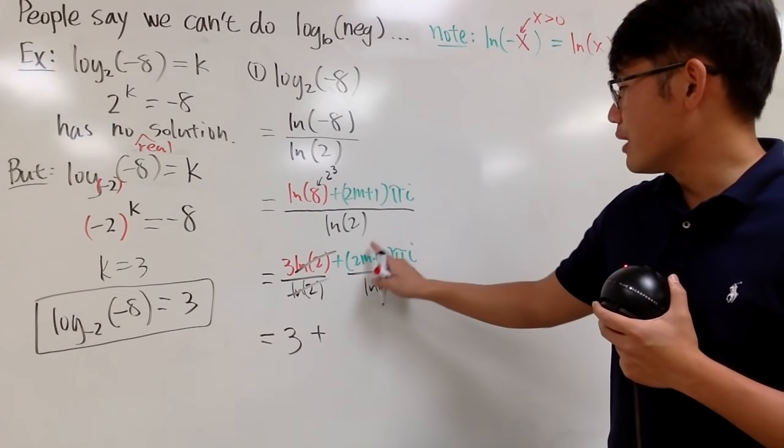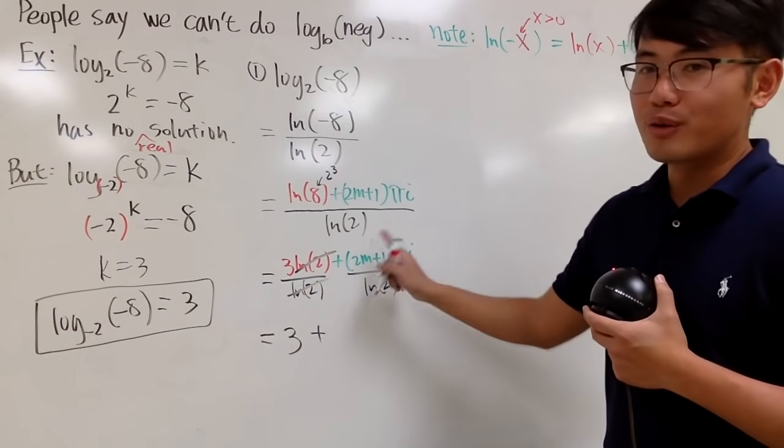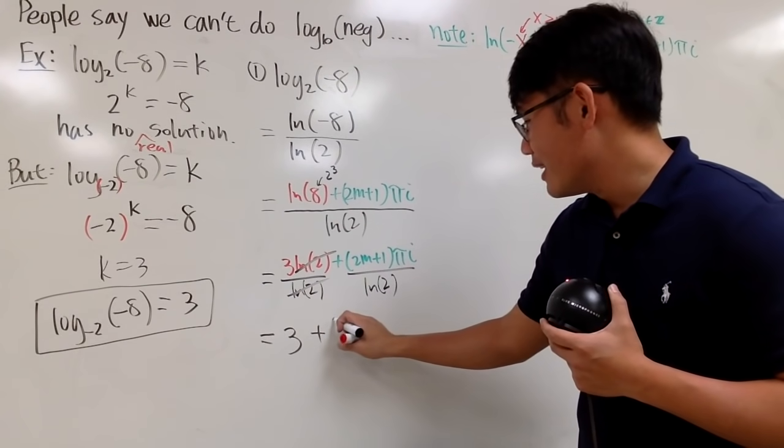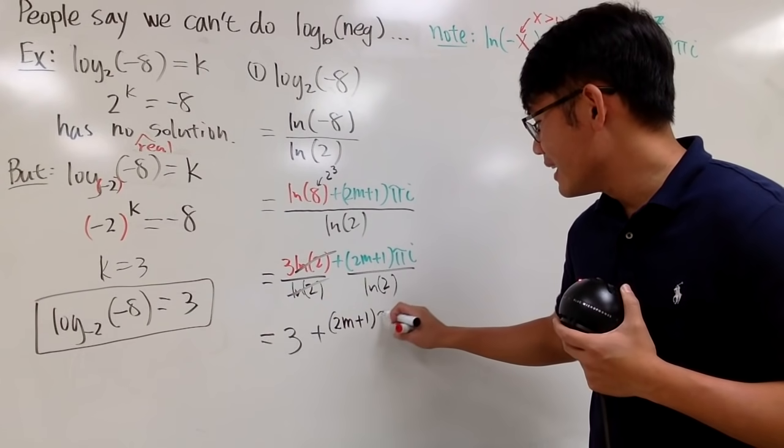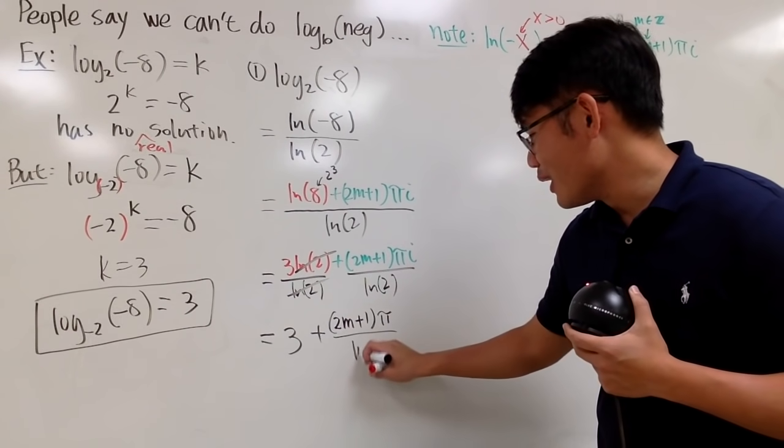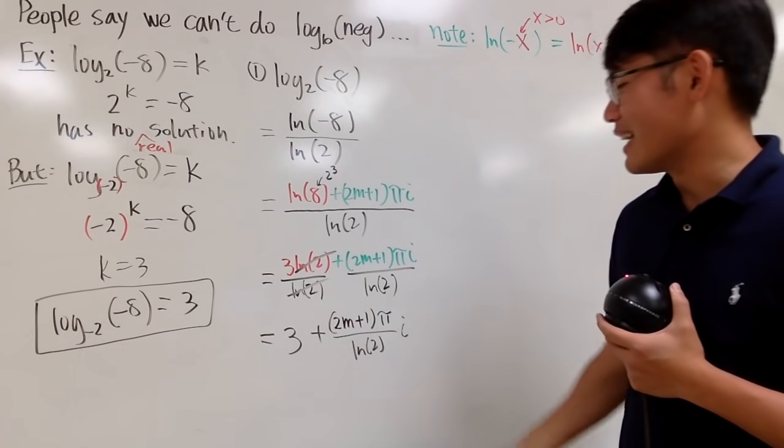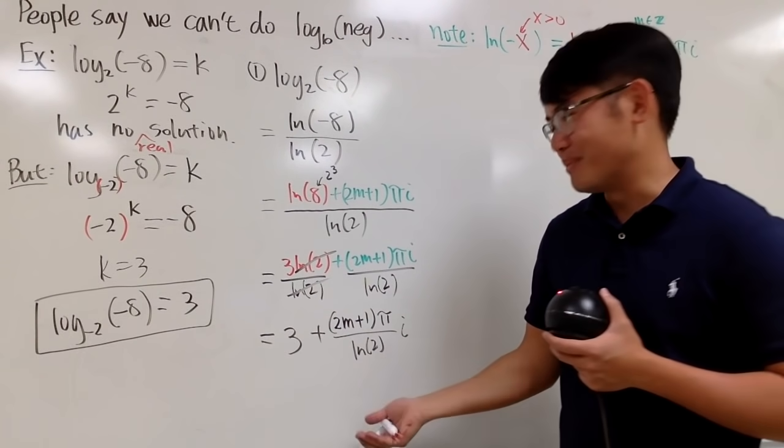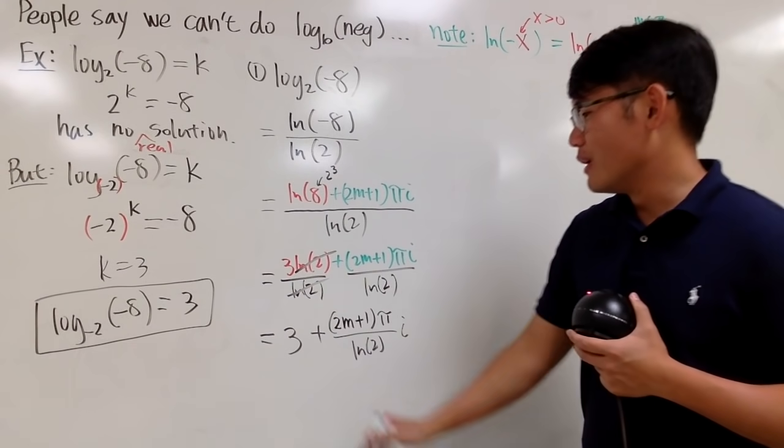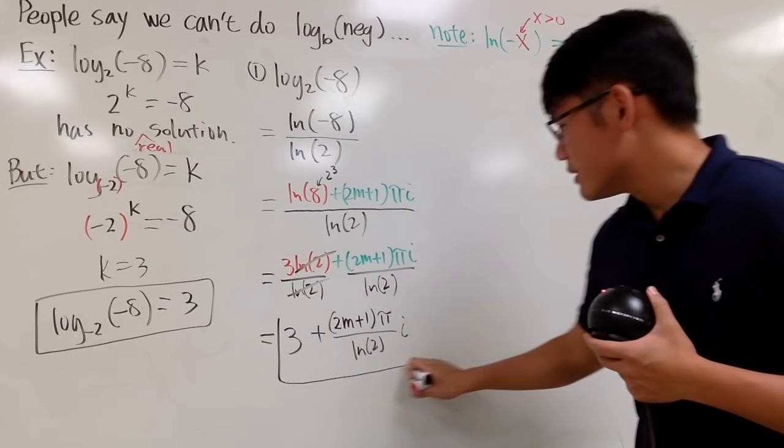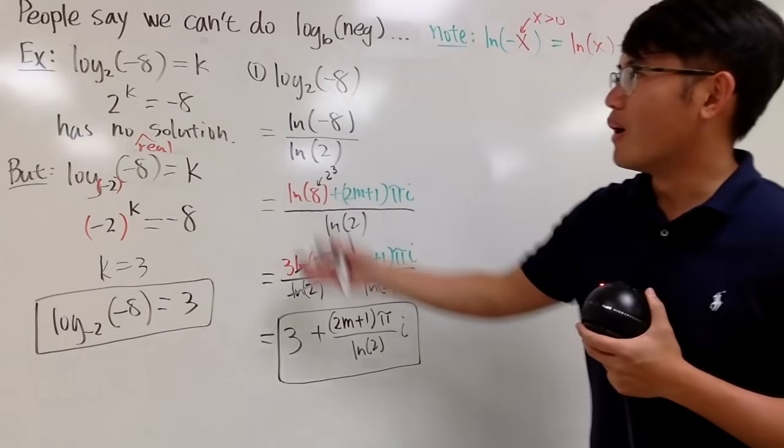And perhaps I will just put down the real number part first, which is this. 2m plus 1 times pi over natural log of 2. And then, let's put the i on the side like that to make it look like a complex number. It is a complex number. A plus bi form.